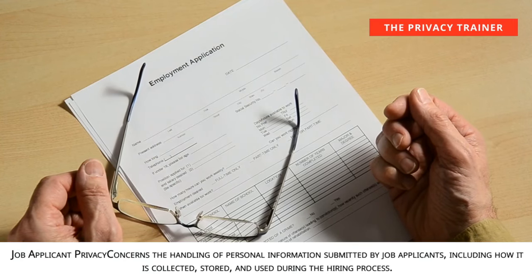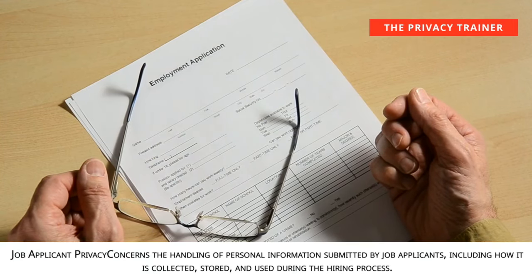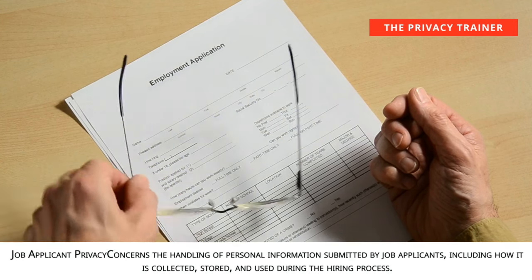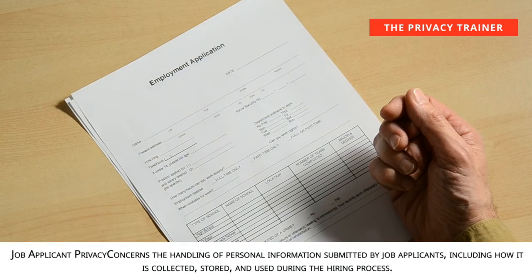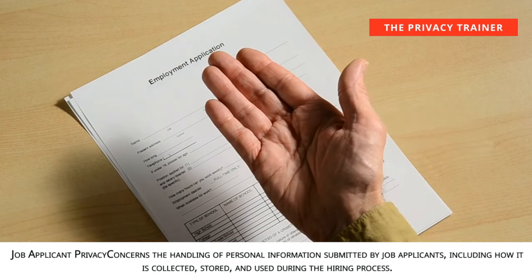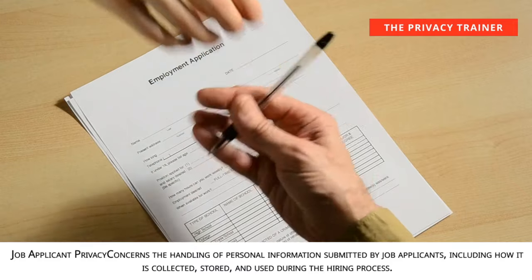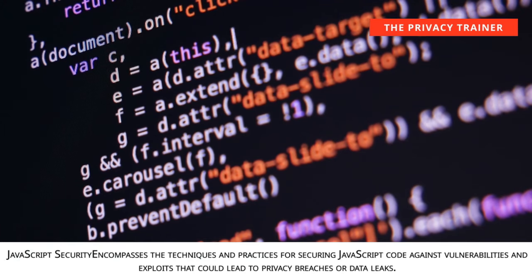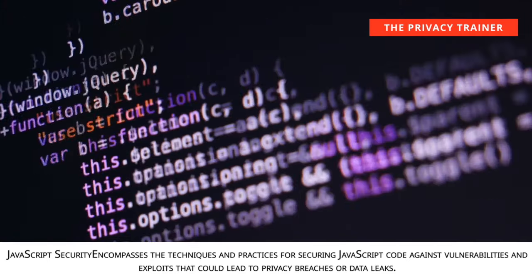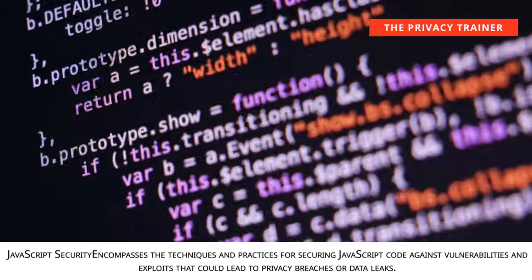Joint data controllers. When two or more entities jointly determine the purposes and means of processing personal data, they are recognized as joint controllers, sharing responsibility for compliance with data protection regulations. Judicial redress. The right of individuals, often non-citizens or residents of a country, to seek legal remedies in courts against unlawful privacy invasions or data breaches, ensuring fairness and accountability. Job applicant privacy. Concerns the handling of personal information submitted by job applicants, including how it is collected, stored, and used during the hiring process. JavaScript security. Encompasses the techniques and practices for securing JavaScript code against vulnerabilities and exploits that could lead to privacy breaches or data leaks.